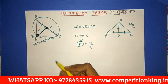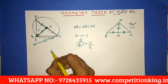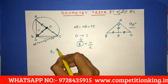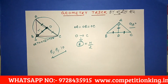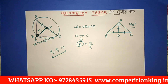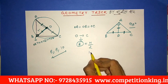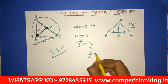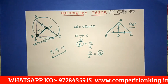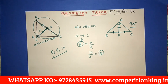The circumradius equals half the hypotenuse. For example, in a 6, 8, 10 right triangle, if the question asks for the distance between the orthocenter and circumcenter, the hypotenuse is 10. So you can directly say the distance between the orthocenter and circumcenter is 5.